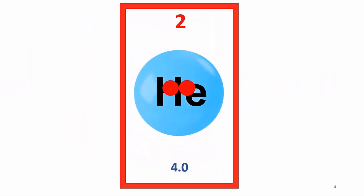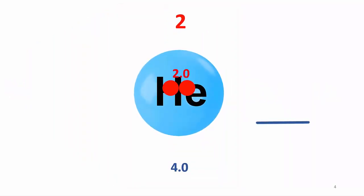For example, helium has two protons weighing two. And because the overall mass is four, the neutrons must also weigh two. So there must be two neutrons, because each weighs one. Two plus two equals four.